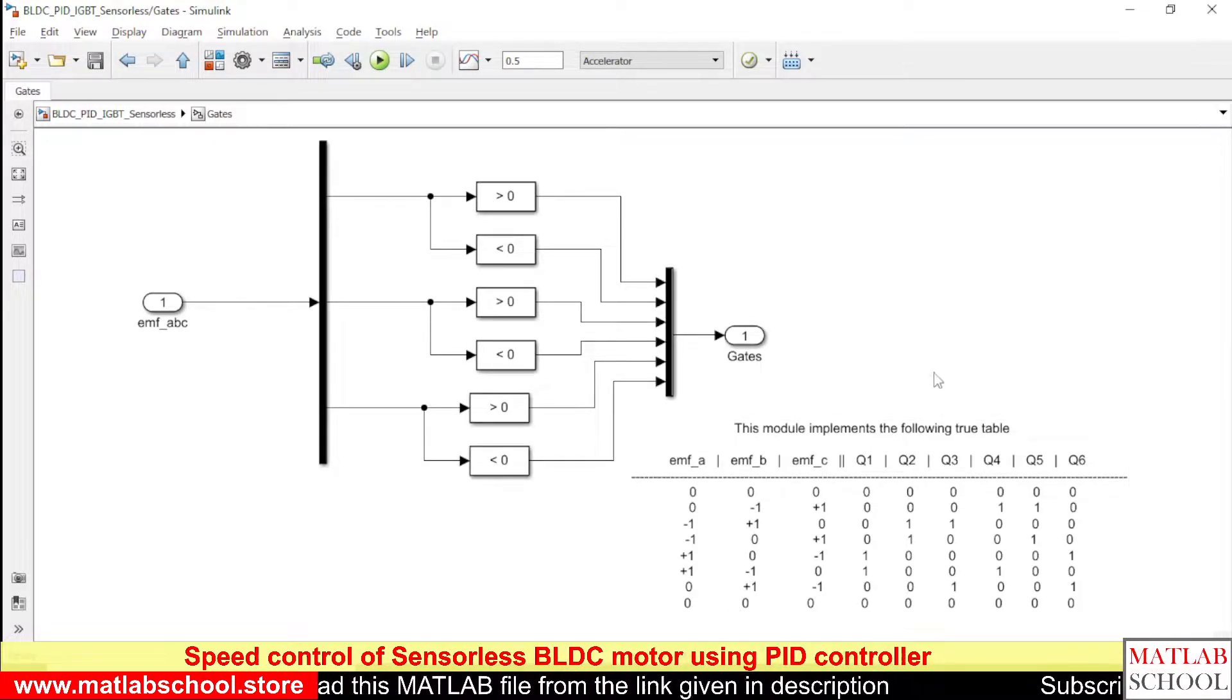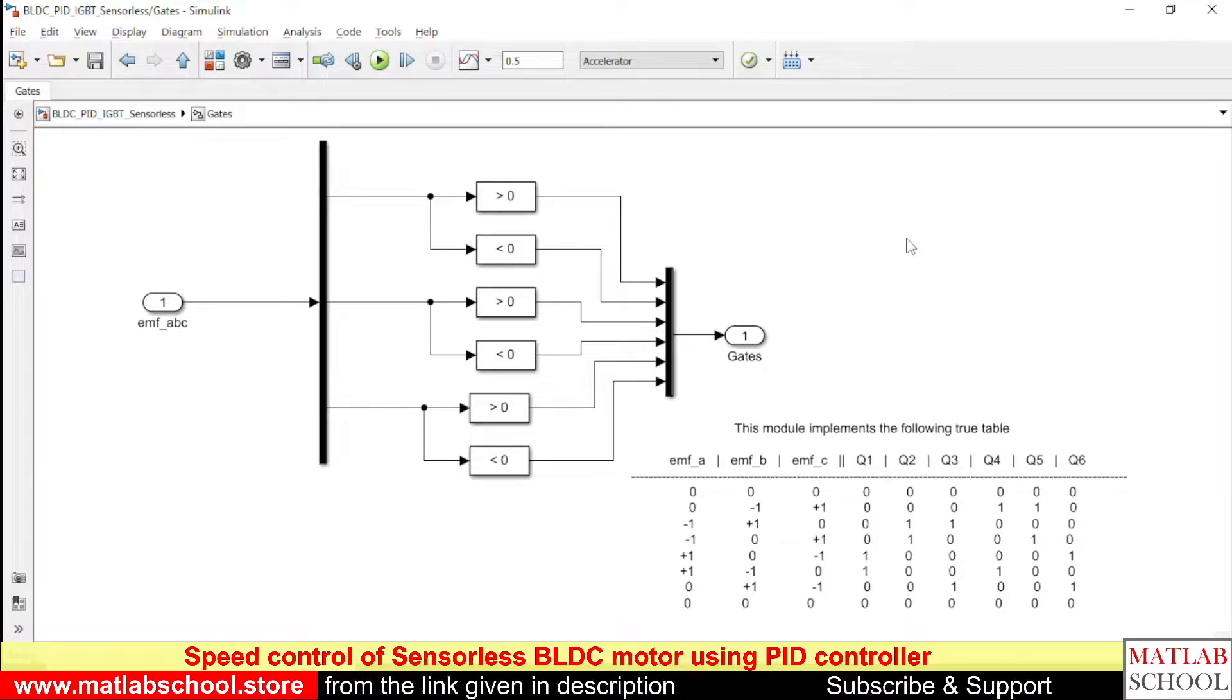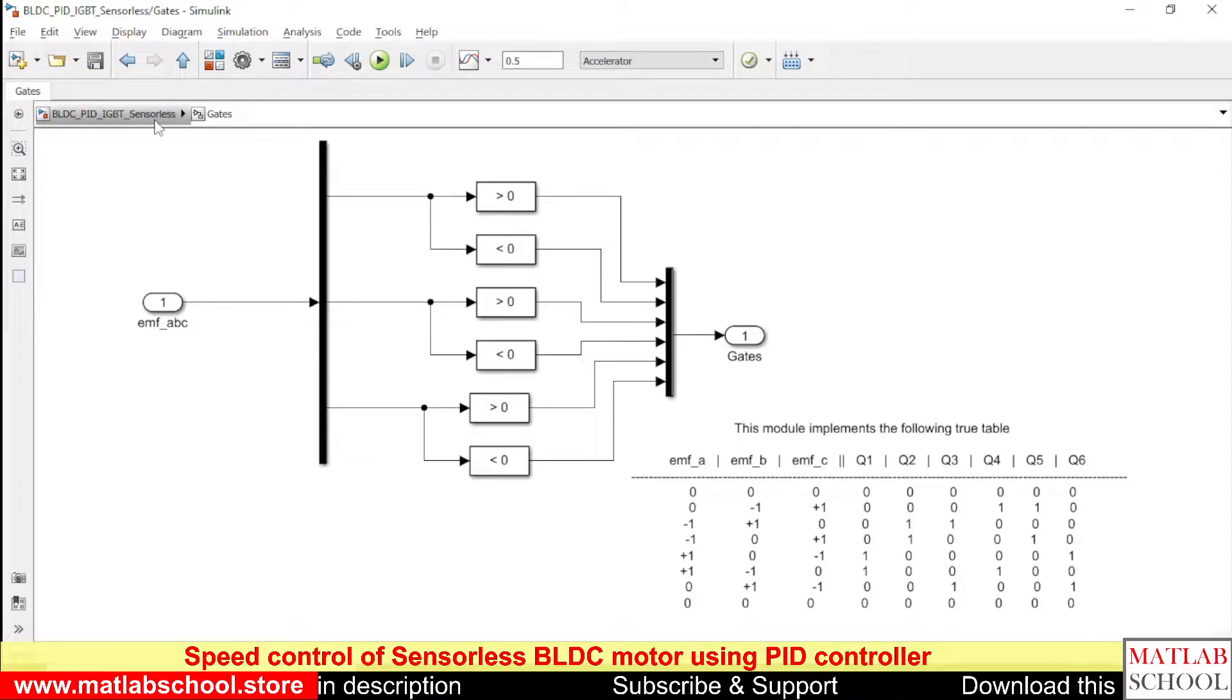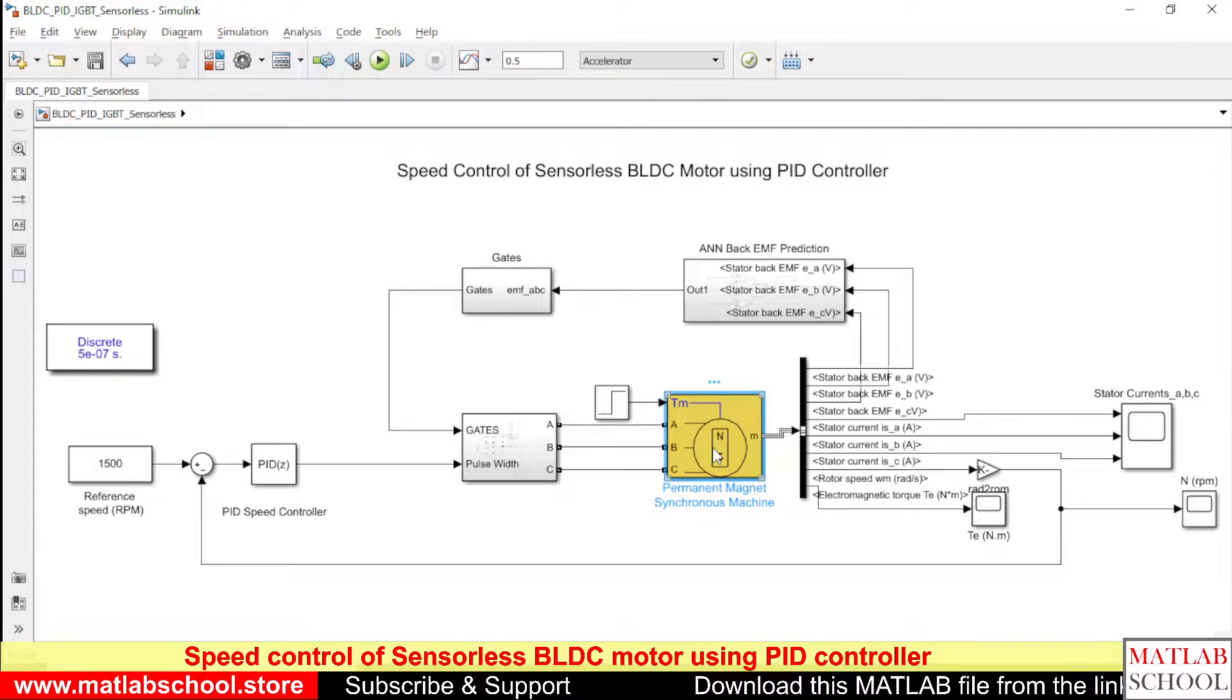So based on the output that is coming from the neural network block, we will be sending in the gate signals. So this is the regular BLDC motor.